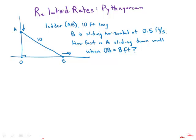So we have a ladder sliding down a wall, the ladder is represented by AB, and it's 10 feet long. We're told that B is sliding at 0.5 feet per second, half a foot per second, this way, and that means that point A is sliding down the wall. We want to know how fast A is sliding down the wall when OB is 8 feet.